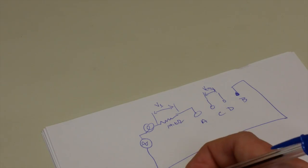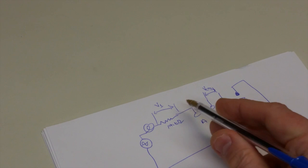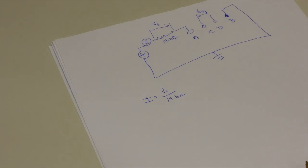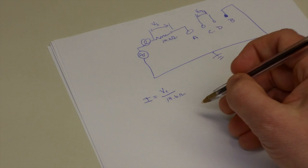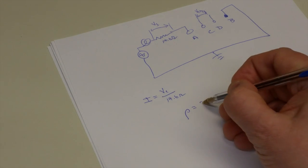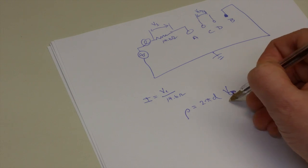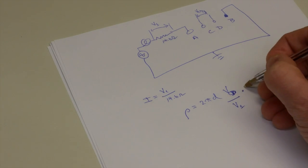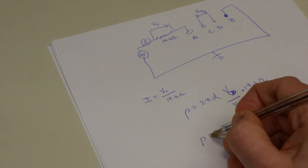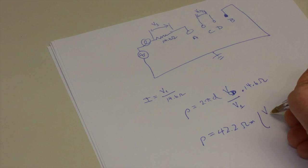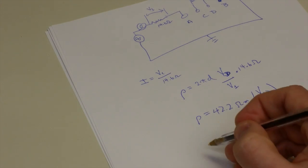We now have everything that we need to make connection with the formula from the chapter. We can use Ohm's law to compute the current flowing into the circuit as V1 over 14.6 ohms. And therefore we can express rho from the formula that we derived as 2 pi D times VCD over V1 times 14.6 ohms.